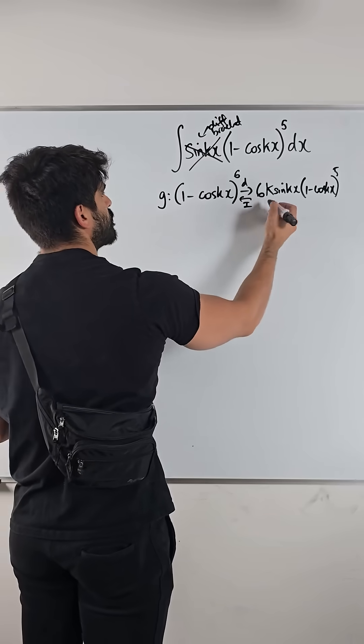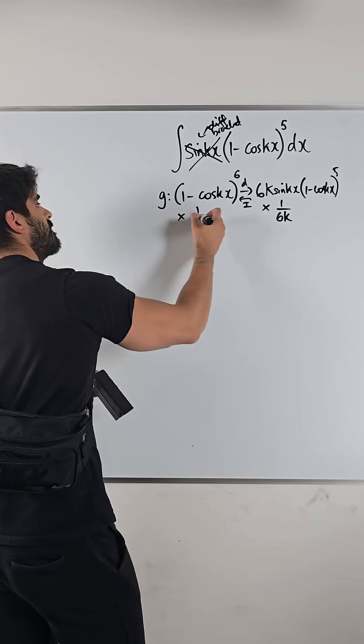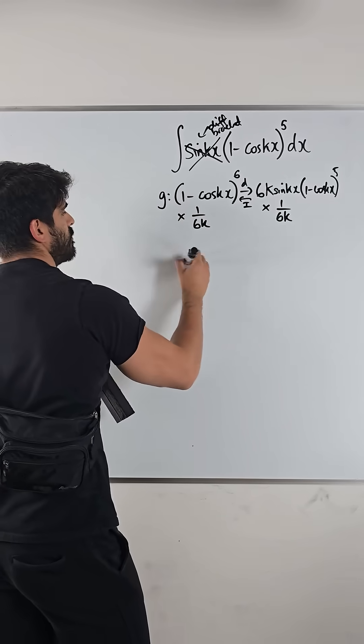This is the exact same as this except we have this 6k. So what we're going to do is get rid of that. I'm going to times both sides by 1 over 6k, or divide by 6k. It's the same thing.